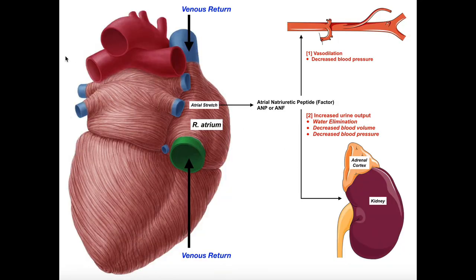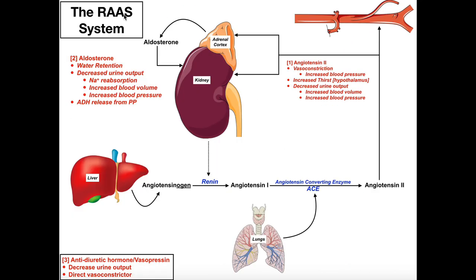In the previous video, we talked about the RAAS system, and we saw that this was a system that responded to low blood pressure and/or low blood volume. That triggers the release of renin, which then triggers the production of angiotensin II and then the future release of aldosterone. So this is a system that responds to low blood volume and low blood pressure and acts in a negative feedback way to raise blood pressure, because that helps us maintain blood pressure at a baseline level — homeostasis.